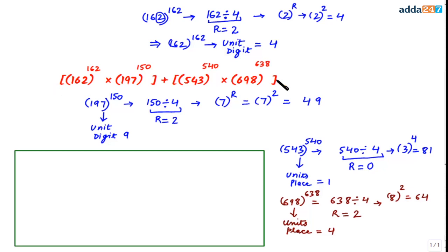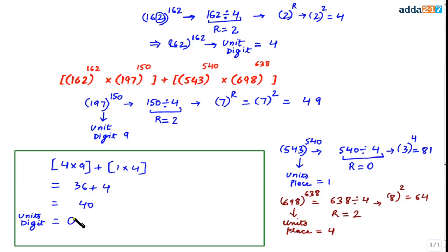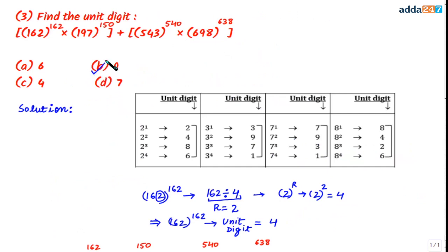Now we combine all the units digits. For 162^162 we have 4, for 197^150 we have 9, for 543^540 we have 1, and for 698^638 we have 4. The expression becomes: (4 × 9) + (1 × 4) = 36 + 4 = 40. The units digit in the final answer is 0. The correct option is B.